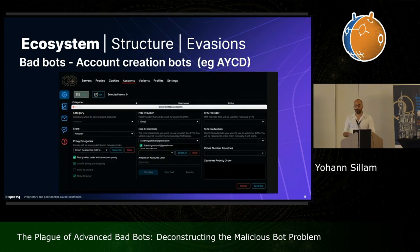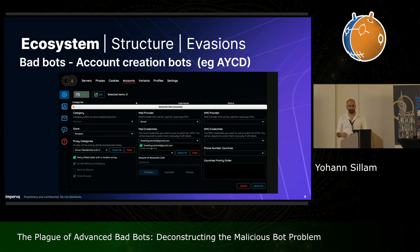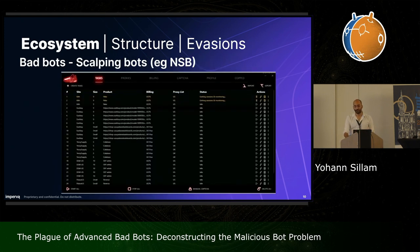Then we have, for example, account creation bots — for example, this one from AOICD. It has the ability to generate accounts for roughly 40 different websites, e-commerce websites like Amazon or Microsoft Xbox. Usually the accounts generated by this bot can be used for another type of attack called scalping.